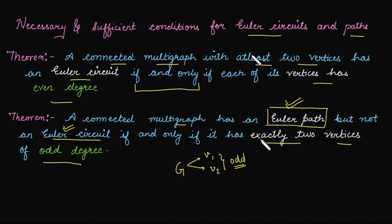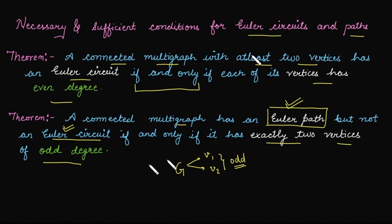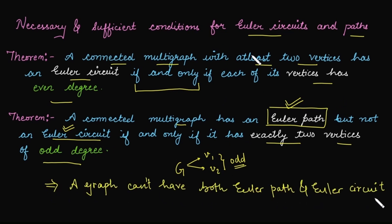A connected multigraph has an Euler path but not an Euler circuit if and only if exactly two vertices have odd degree. If a graph has more than two vertices of odd degree, it does not have an Euler path. Also, if the degree of each vertex is even, there is no Euler path. A graph cannot have both an Euler path and an Euler circuit — it has one or the other, or neither.